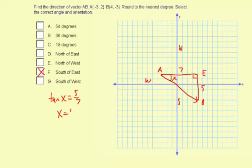That means x is going to be the inverse tangent of 5 sevenths. So you can do inverse tangent of 5 sevenths on a calculator and find out what that angle is.